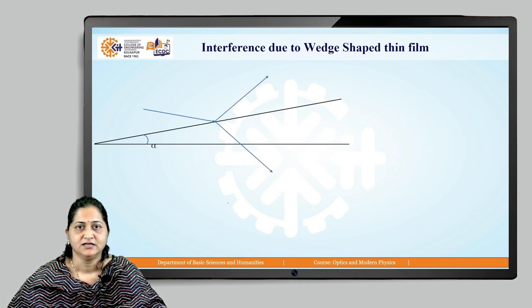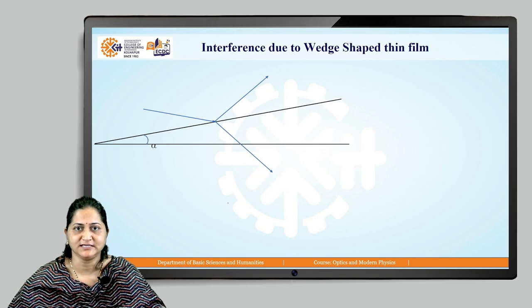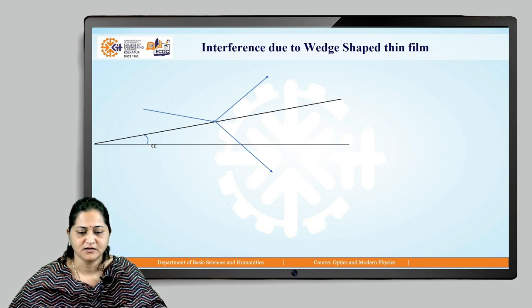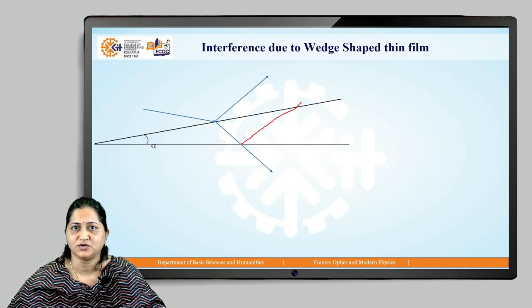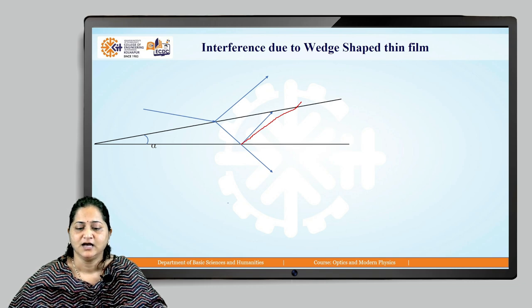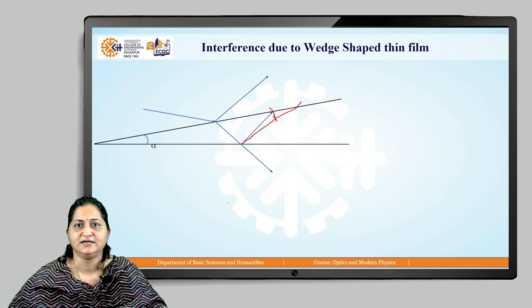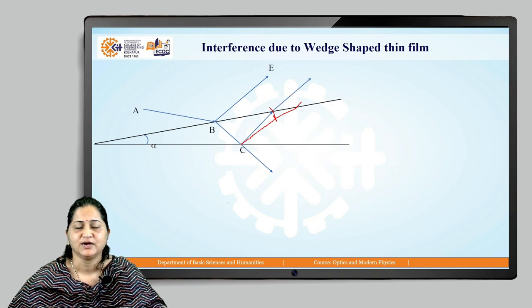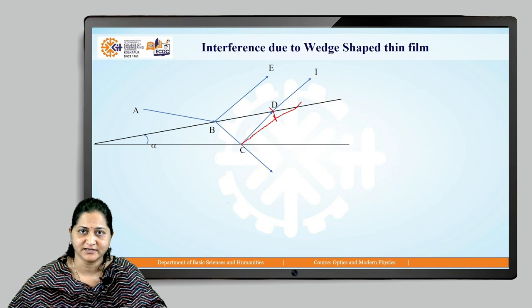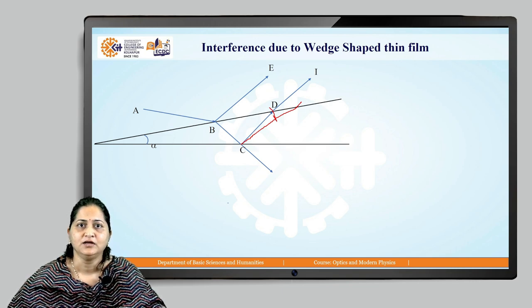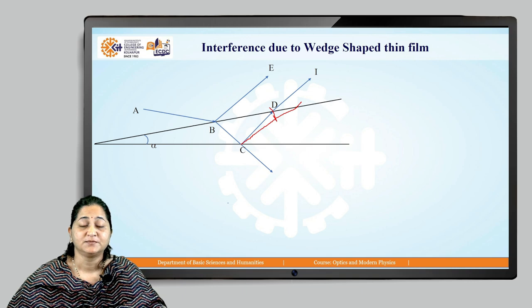The incident ray AB undergoes partial reflection and refraction. The reflected ray is BE and the refracted ray is BC. At point C, the bottom surface, the ray undergoes partial reflection and refraction again — we show only the reflected ray. At point D, the ray undergoes partial reflection and refraction; we show only the refracted ray DI. The notations AB, BC, CD, and DI are chosen to match our previous video.